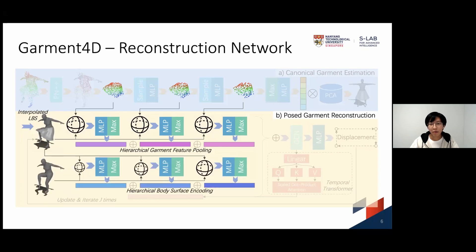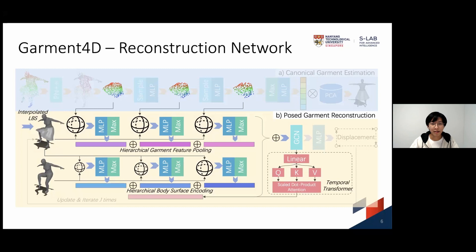Moreover, to better model correct interaction between garments and human body, we use ball-query pooling with different radii on the body vertices, which we call hierarchical body surface encoding. For each vertex of the candidate skirt mesh, we gather the pooled features for the GCN. In order to extract temporal information from point cloud sequences, a temporal transformer is integrated into the GCN. The feature pooling and displacement predictions are iterated multiple times to refine the candidate garments, giving the final posed garment reconstruction.